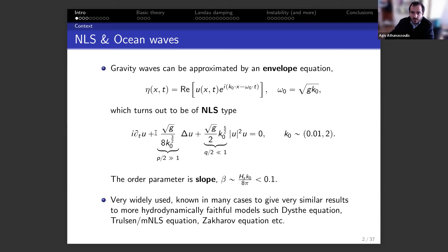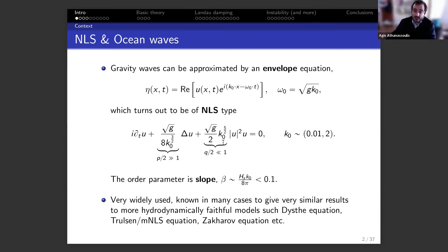The NLS has coefficients where g is acceleration of gravity and k₀ is the typical wave number in the wave packet. The wave number k is a small number — usually closer to 0.01 or 0.1. Higher wave numbers are not very interesting. The important thing to note is that the order parameter is slow.